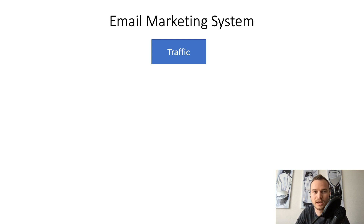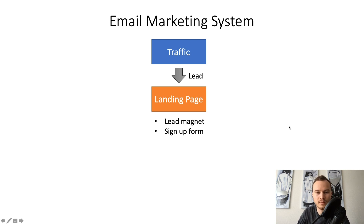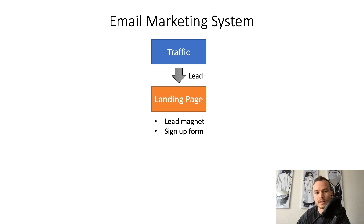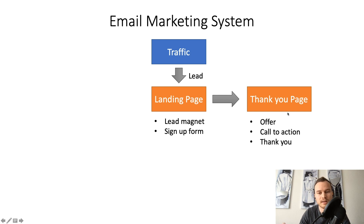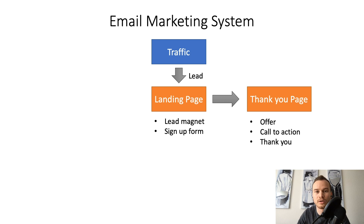What you need to do with this traffic is send them to a landing page, where they can sign up for your email list. The right way to do this is to have a lead magnet — something you're giving away for free — that people actually want to sign up for. On your landing page, you're telling them they can download this lead magnet for free, like a free checklist or free e-book. All they need to do is sign up with their email address. Once they do, they'll get to a thank you page, which could be an offer, a prompt to subscribe to your YouTube channel, or just a basic thank you telling them to check their inbox for the welcome email or free download.